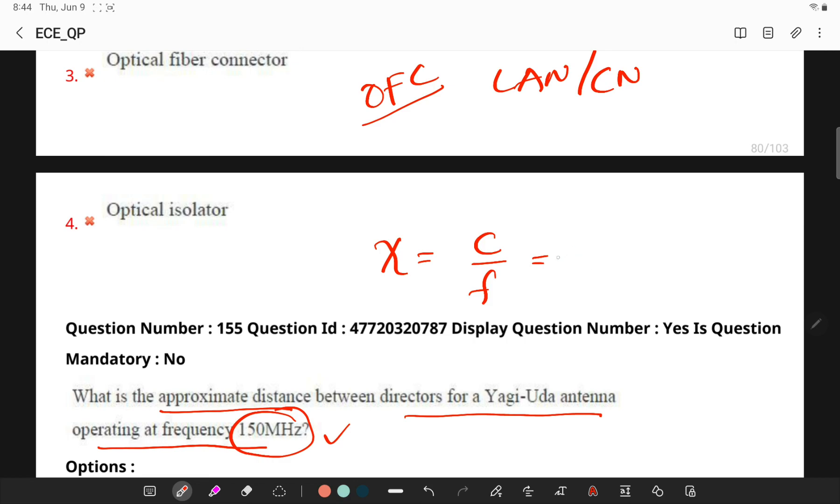Here, the frequency is given as 150 megahertz. So velocity of light is 3 into 10 power 8 meters per second and operating frequency is 150 megahertz. So if I do the calculations, I will be getting lambda is equal to 2 meters.